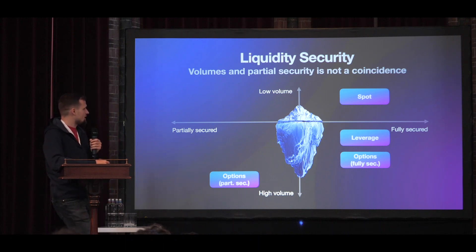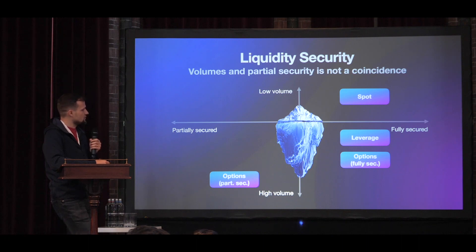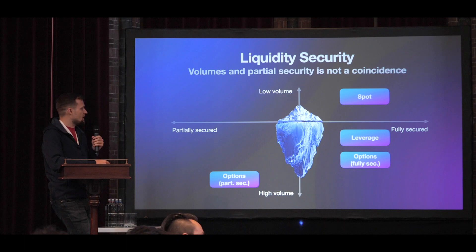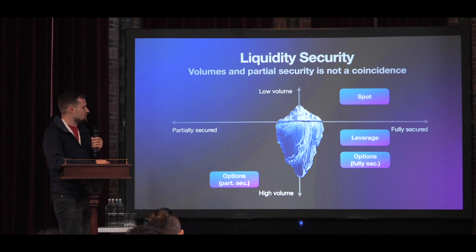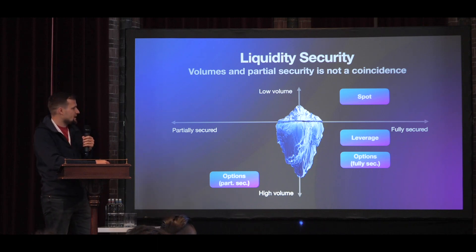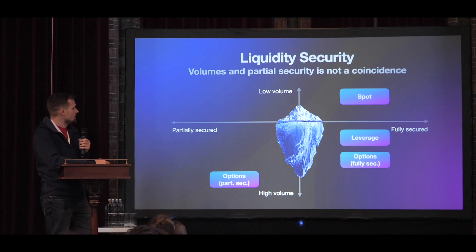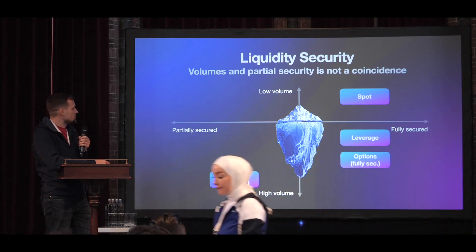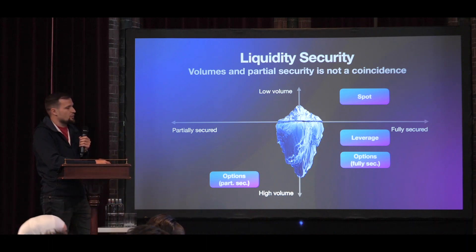Leveraged positions usually generate higher trading volumes, and they're still fully secured, except for synthetic assets. Traders can turn 1K of value into 5K collateral and 4K debt, making it effectively a 5X long on one asset or a 4X short on another — it depends on how you look at the position. Regarding options, they can be fully secured or partially secured, depending on the protocol.